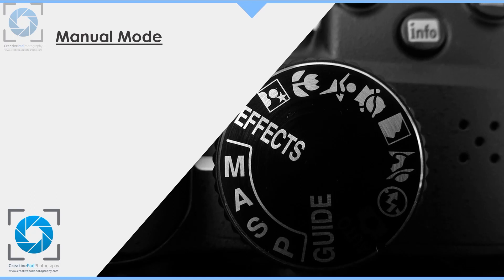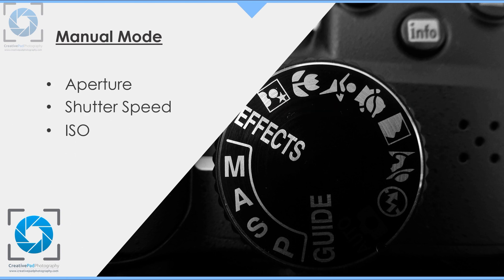Manual mode consists of three important settings. These settings are aperture, shutter speed, and ISO. These three make up the manual mode and are the most important settings in a DSLR camera.